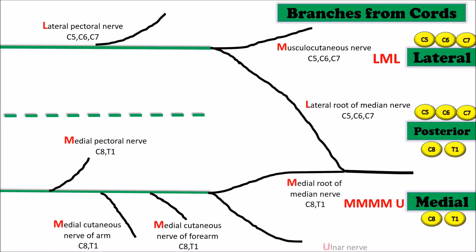The root value of all the nerves from the medial cord is C8, T1, except the ulnar nerve which receives additional C7 fibers from the lateral root of the median nerve.